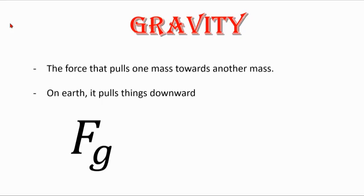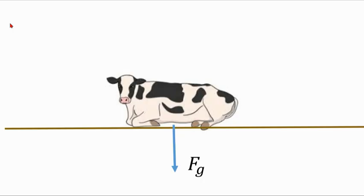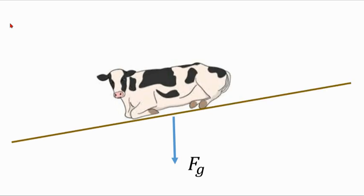So for any situation, unless it specifically states that it's way off in space somewhere, we expect there's going to be a force of gravity that's pulling the object straight down towards the center of the Earth. So you might ask the question, what if the cow is on a hill? Is the force of gravity still straight down?